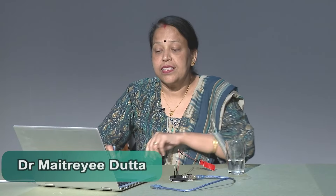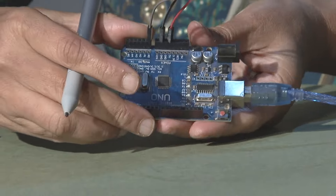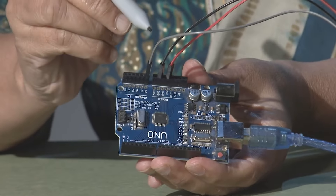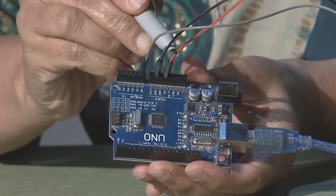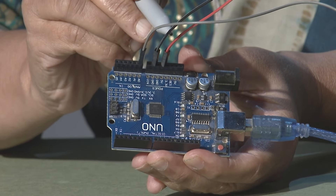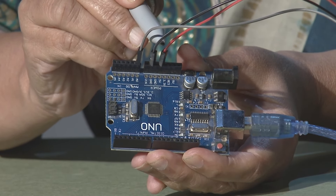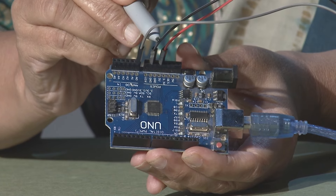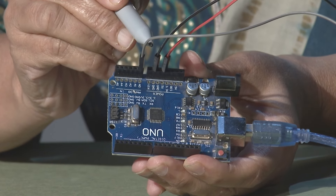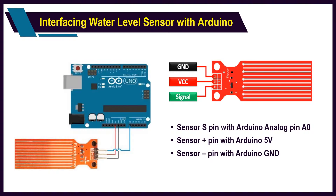This sensor is connected to the Arduino board. The VCC is connected to the 5 volt pin, GND is connected to the GND pin, and the signal is connected to any analog pin — A0, A1, A2, A3, A4, or A5.